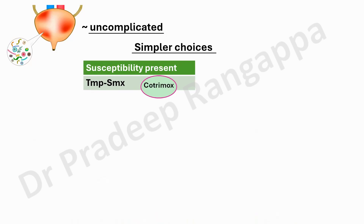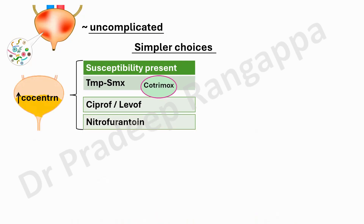Trimethoprim-sulfamethoxazole is recommended by IDSA — a very simple antibiotic — provided there is susceptibility. Obviously you don't give this when there is a resistance pattern in your cultures. If there is susceptibility along with resistance to carbapenems, you can use ciprofloxacin and levofloxacin, which most of the audience are very familiar with. Nitrofurantoin, although simple, can also be used in uncomplicated cystitis if there is sensitivity, even in CRE, because these antibiotics attain very high urine concentrations.